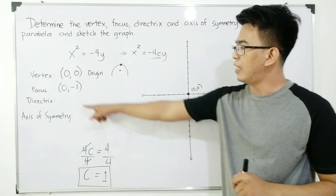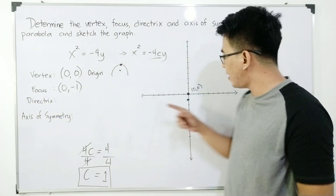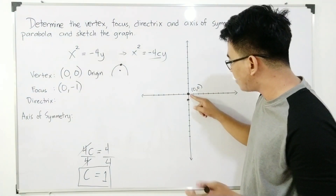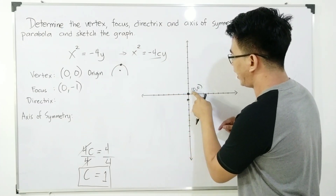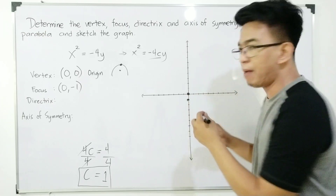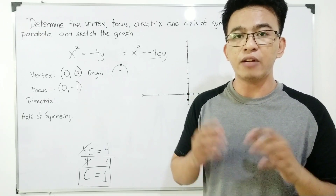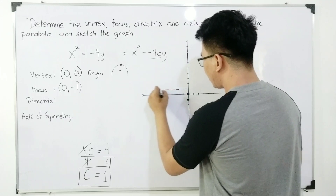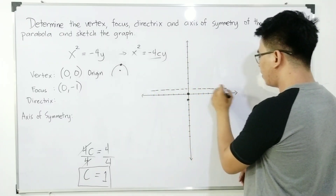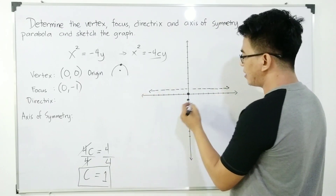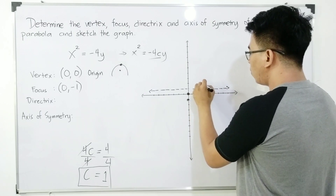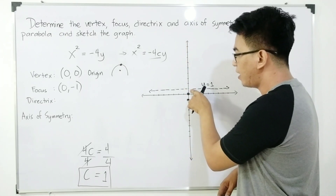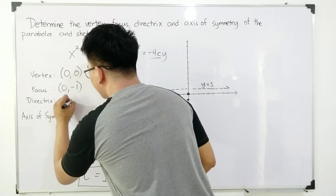Now let's go to the directrix. Since the vertex is at (0, 0) and we moved down for the focus, for the directrix we move 1 unit upward from the vertex. Remember, the directrix is not a point — it is a line. So the equation of the directrix is y is equal to 1, since it is perpendicular to the y-axis and located at y = 1.